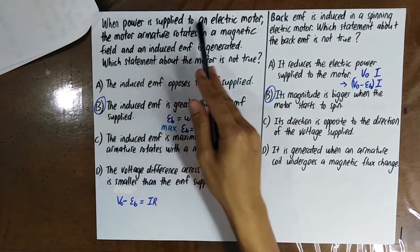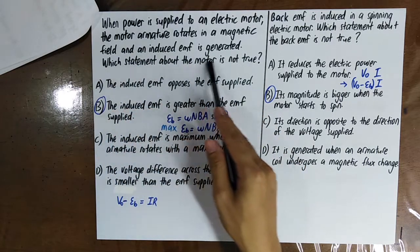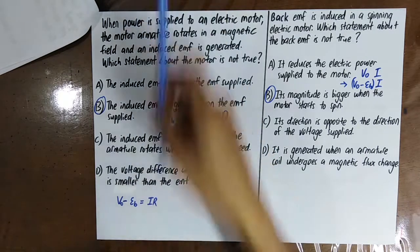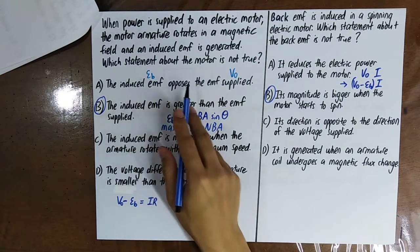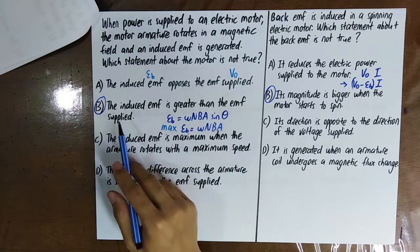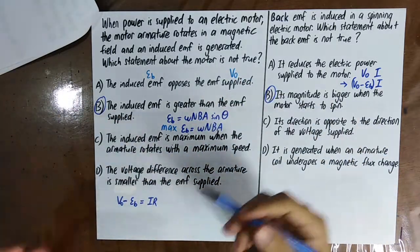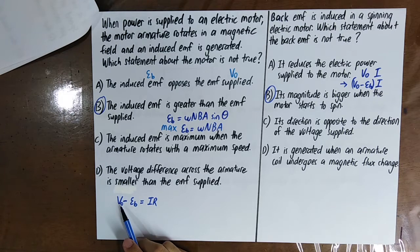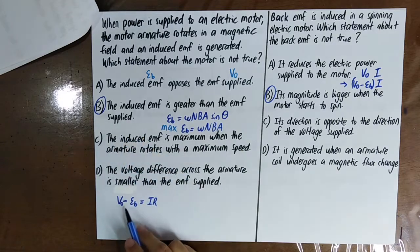MCQ: When power is supplied to an electric motor, the armature rotates and an induced EMF is generated. Statement: 'The induced EMF opposes the EMF supply' — True, because V₀ − EB shows EB opposes V₀. Statement: 'The induced EMF is greater than the EMF supply' — False. No matter how fast the coil rotates, there is an upper limit, so EB is always smaller than V₀.